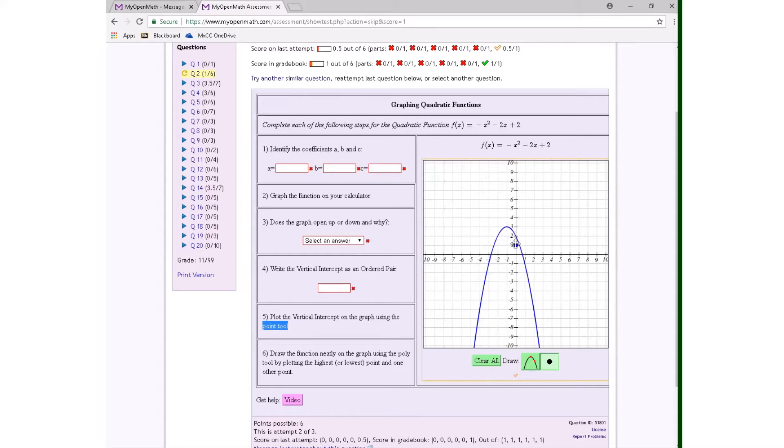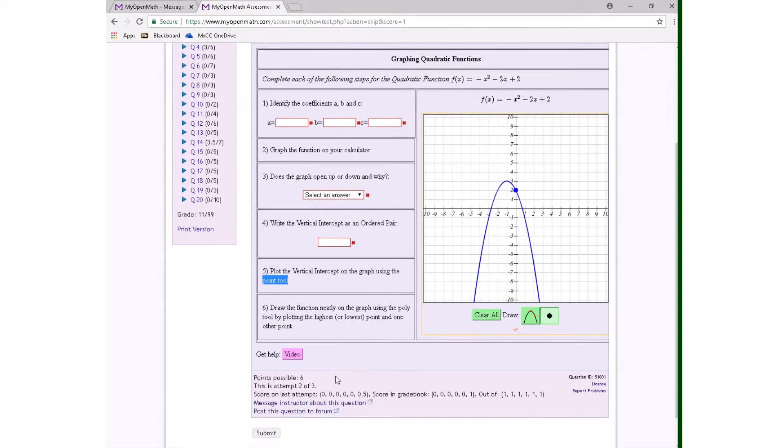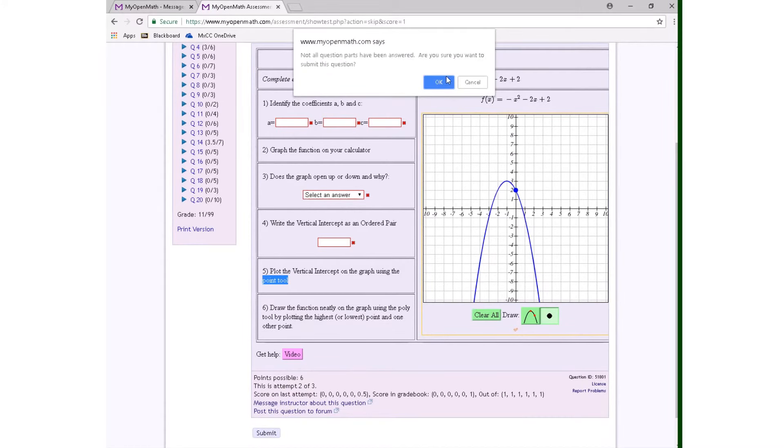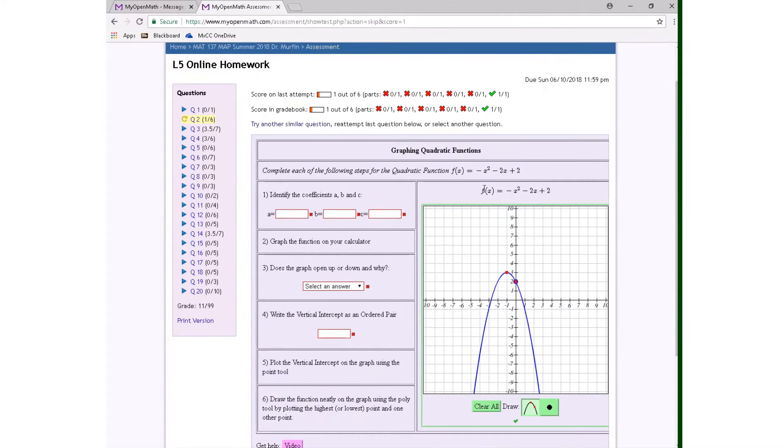If you don't plot it exactly where it needs to go, you can move it. Otherwise, you have to clear everything. So now this should be okay. Let's see. There we go. We got the green box, so that's good to go.